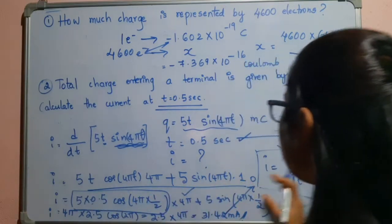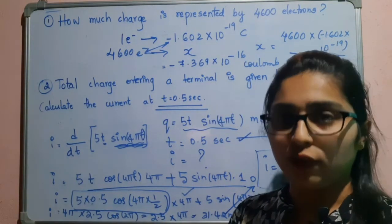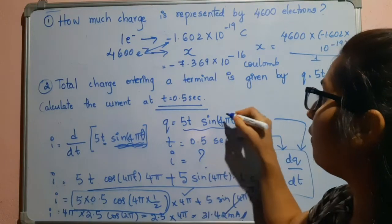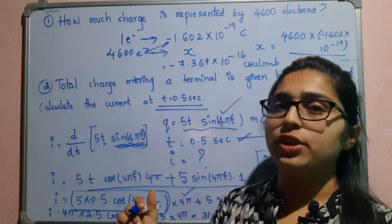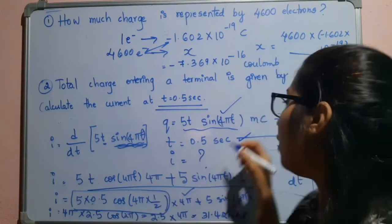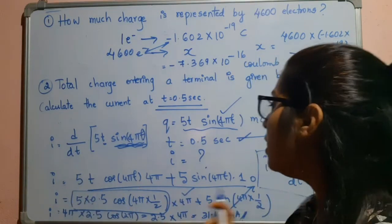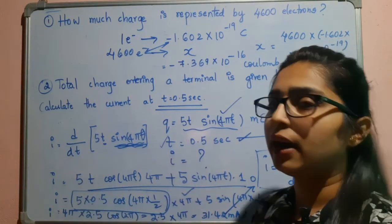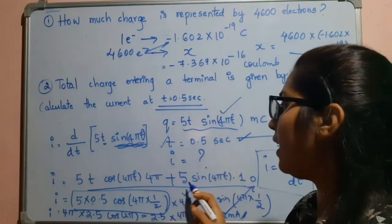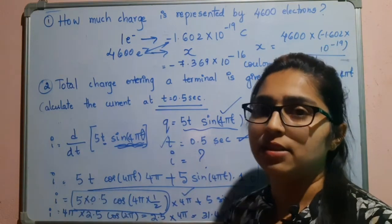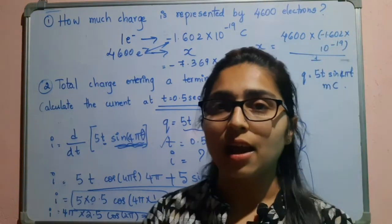So 31.42 milliamperes is the answer. What we did: we took the formula i = dq/dt, the rate of change of charge. We were given q, so we differentiated it with respect to t. After differentiating, we substituted t = 0.5, and finally arrived at this answer.